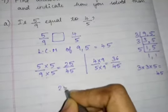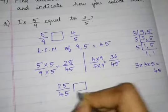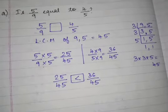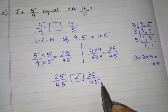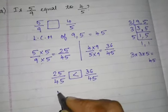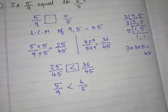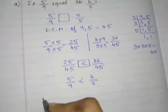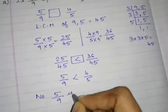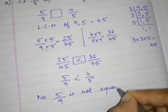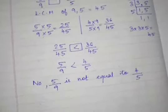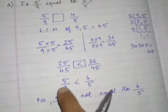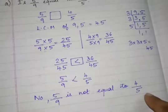So now comparing 25 by 45 and 36 by 45: obviously 36 by 45 is greater because both have the same denominator, so we compare numerators. Therefore 5 by 9 is less than 4 by 5. But they are asking whether 5 by 9 is equal to 4 by 5. The answer is no — 5 by 9 is not equal to 4 by 5. The conclusion is very important; you should give the reason.